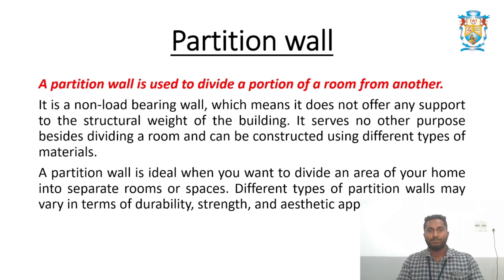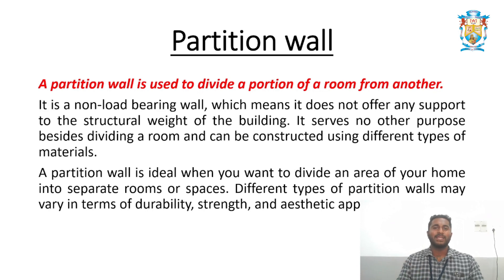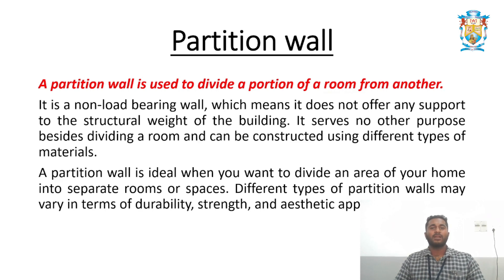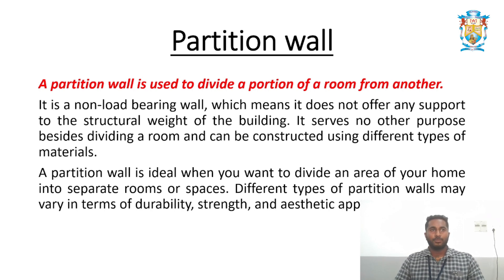The thickness of a partition wall depends upon the material used. The main purpose is to divide rooms into different spaces. A partition wall is ideal when you want to divide an area of your home into separate rooms. Different types of partition walls may vary in terms of durability, strength, and aesthetic appearance, and can also be used for decorative purposes.